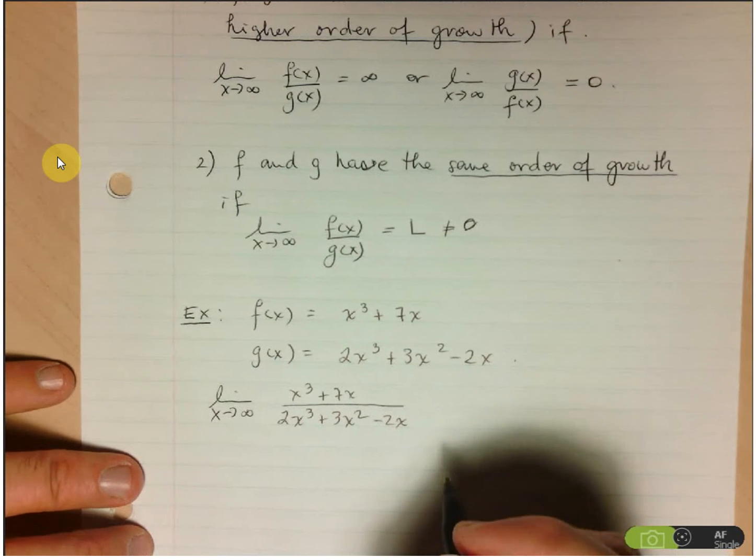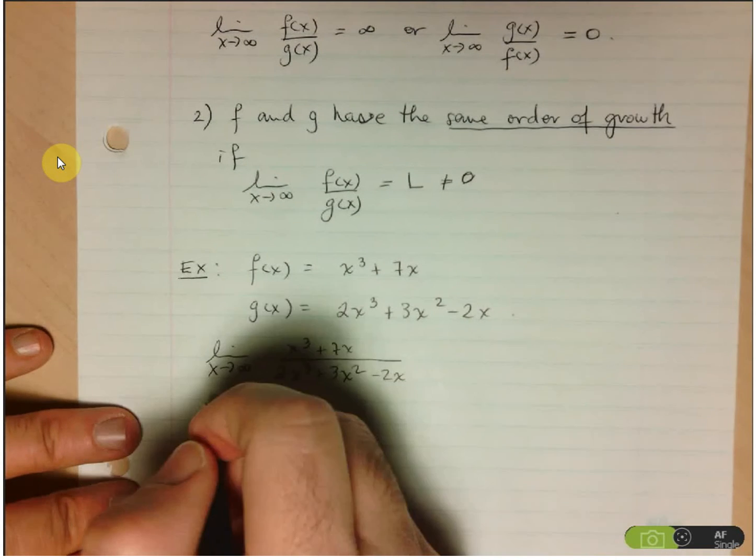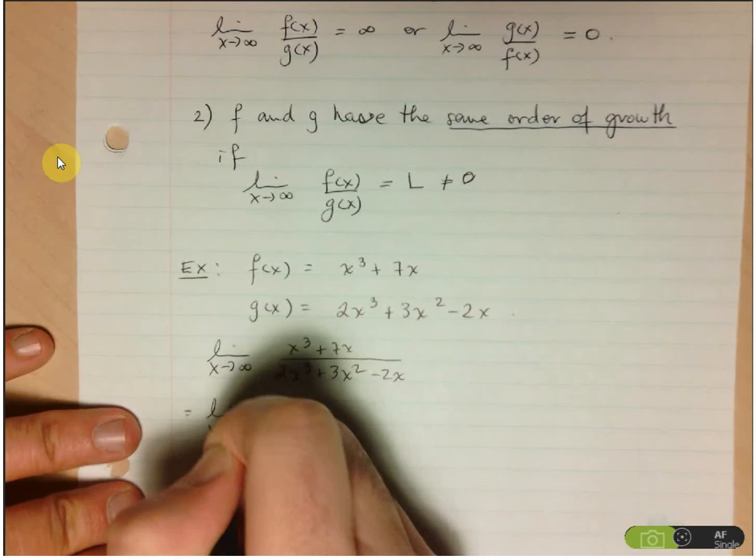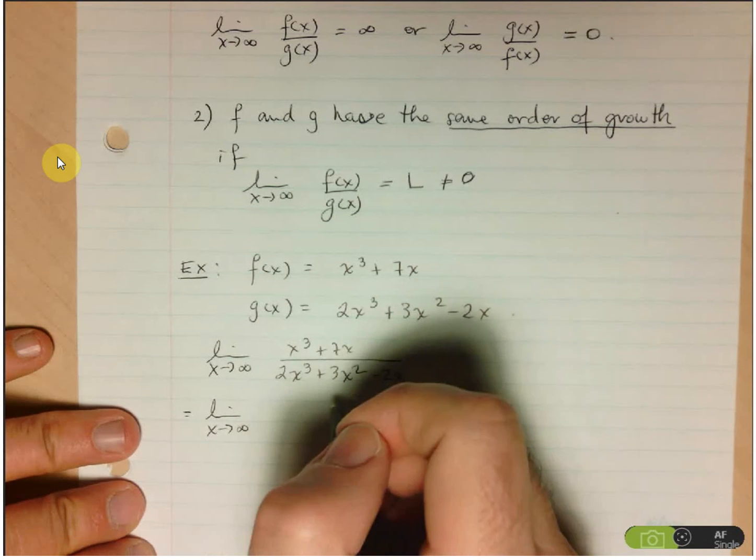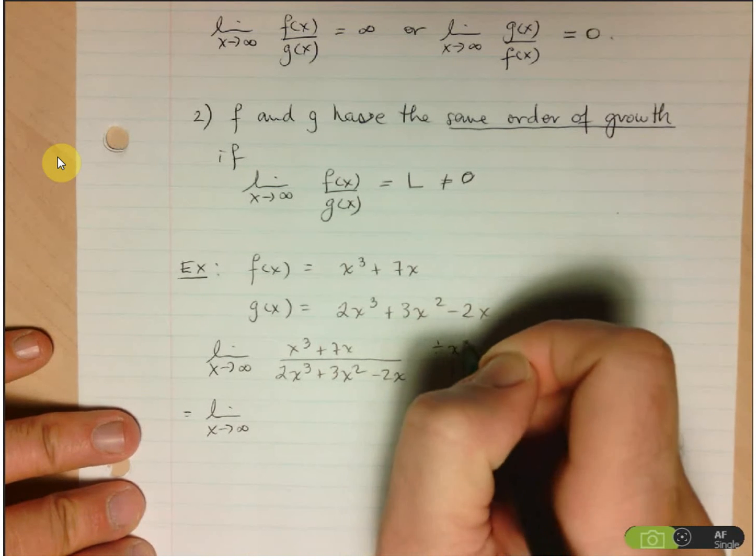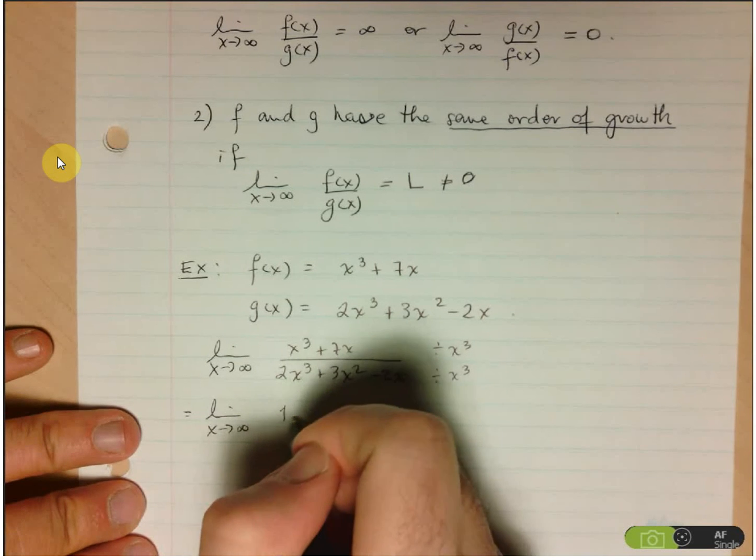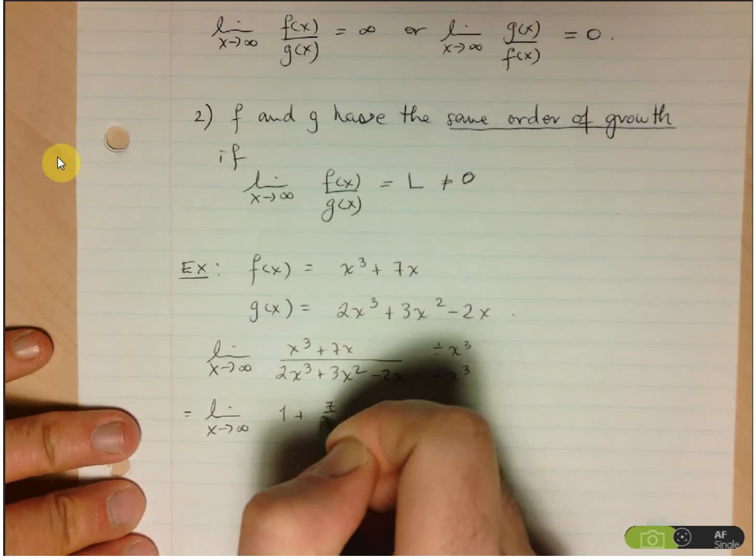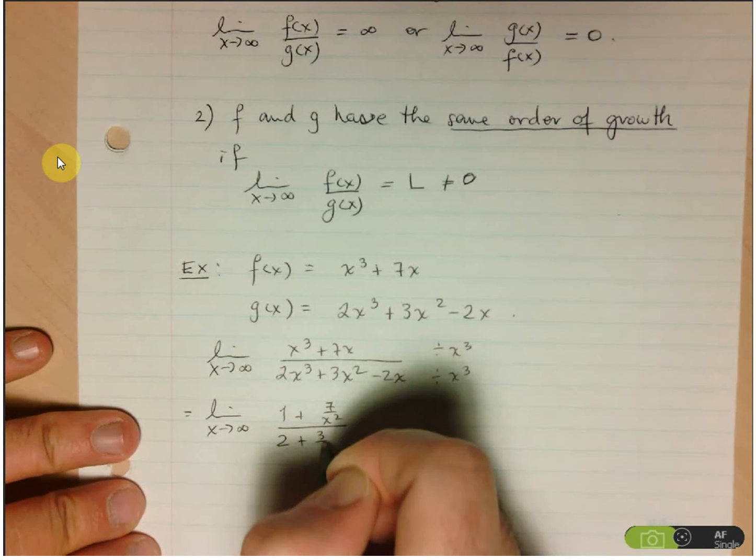And in order to take this limit, again, we can use our old trick of dividing top and bottom by the highest power of x. So, here we would have limit as x goes to infinity of, and let's divide the top by x cubed and the bottom by x cubed.